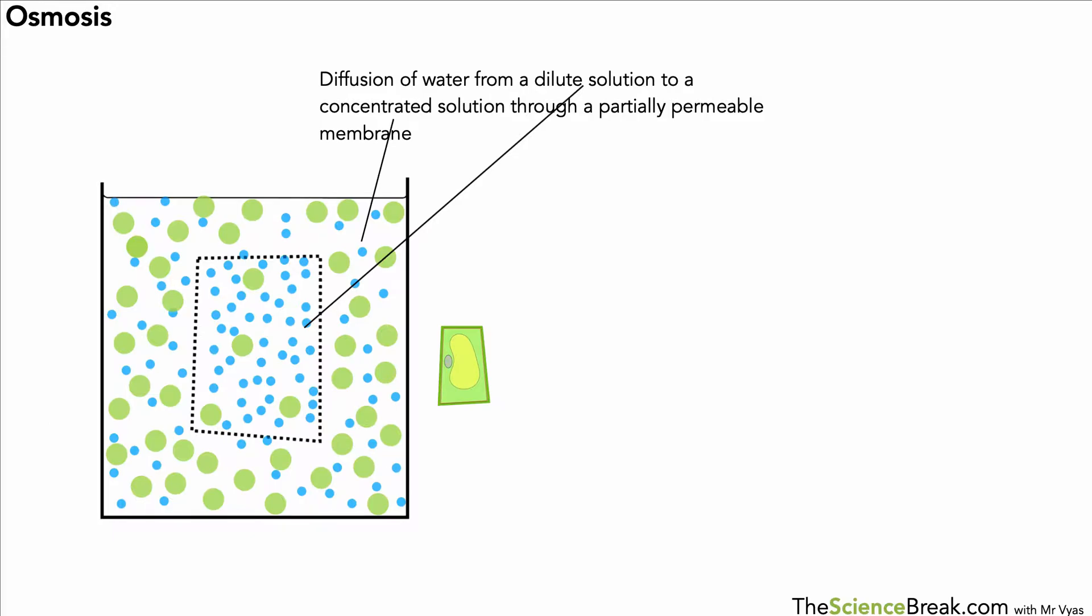We can look at what happens in the opposite direction. If we had another diagram here, this time you could see that the dilute solution is on the inside of the plant cell and the more concentrated solution is on the outside. If you're thinking ahead a little bit, you might realize that the water in this case would move out of this cell.